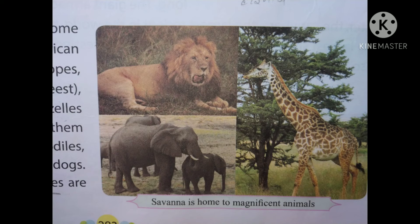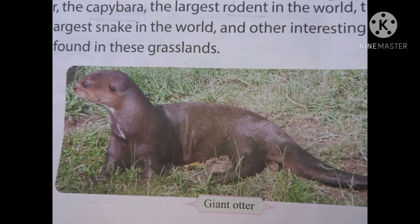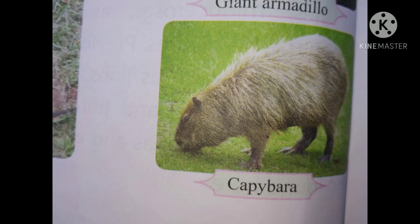Children, Australian grasslands are called the bush. In Australia, the grasslands are called bush, where kangaroos, wallabies, emus and dingoes live. As you can see in this picture, children — emus, kangaroos — these all animals live in the Australian grasslands.